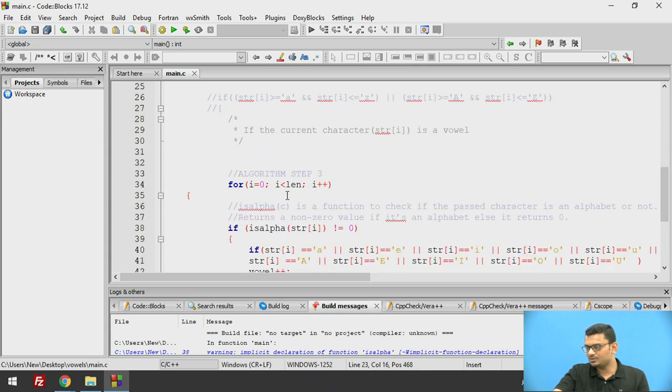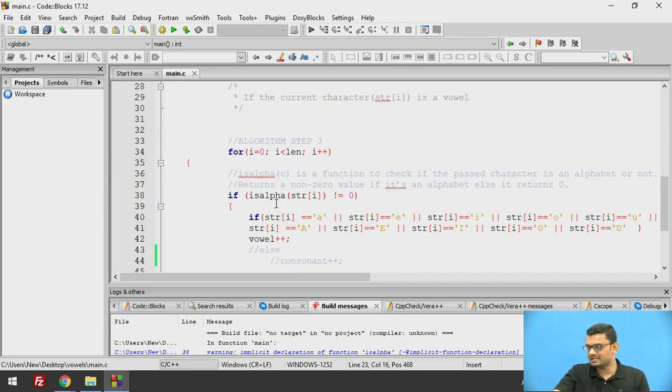Now we come down at line number 34 to implement the third step of the algorithm. I am scanning this string from 0 to length. Now if isalpha string of i not equals 0. I will give the explanation why we are using isalpha function. isalpha function when passed a character is a function to check if the passed character is an alphabet or not.